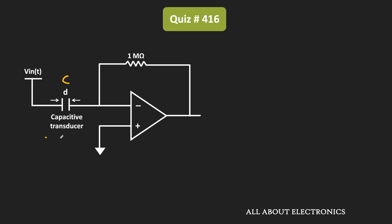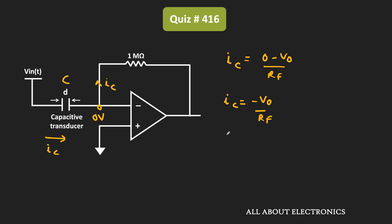In that circuit, if Ic is the current through the capacitor, and if the op-amp is ideal, then we can say that this capacitive current Ic is equal to (0 − Vout) divided by Rf. If the op-amp is ideal, then this node will act as a virtual ground. And since no current is flowing into the op-amp terminal, this current should also be equal to Ic. That means Ic equals minus Vout divided by Rf. And as you know, Ic equals dQ/dt — the rate of change of charge — and Q equals CV.